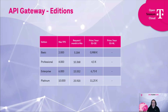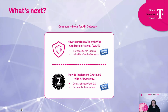Regarding the API Gateway editions: there are four editions available today. The first edition is limited to a maximum of 2,000 transactions per second, which amounts to approximately 5 billion requests per month — plenty of capacity to get started. Pricing is listed per compute hour. Currently only the Germany region is available; the Netherlands is not yet activated.